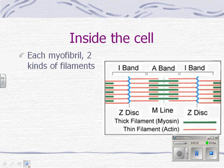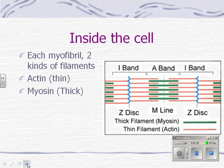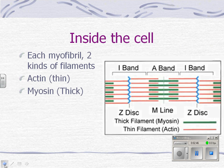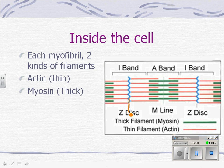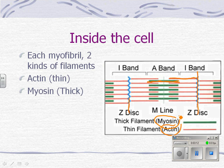Each myofibril has two kinds of filaments: actin, the thin filament, and myosin, the thick filament. When you look at a segment of muscle, the Z-lines are here and here, with thin filaments called actin in red, and in the middle a thick filament called myosin. Now we're going to talk about how a muscle contracts — what do actin and myosin have to do with contraction?